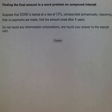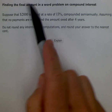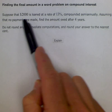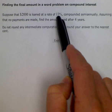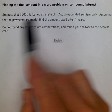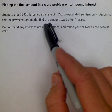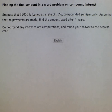Our problem says suppose that $2,000 is loaned at a rate of 13% compounded semi-annually. Assuming that no payments are made, find the amount owed after four years. So this is just a compound interest word problem.